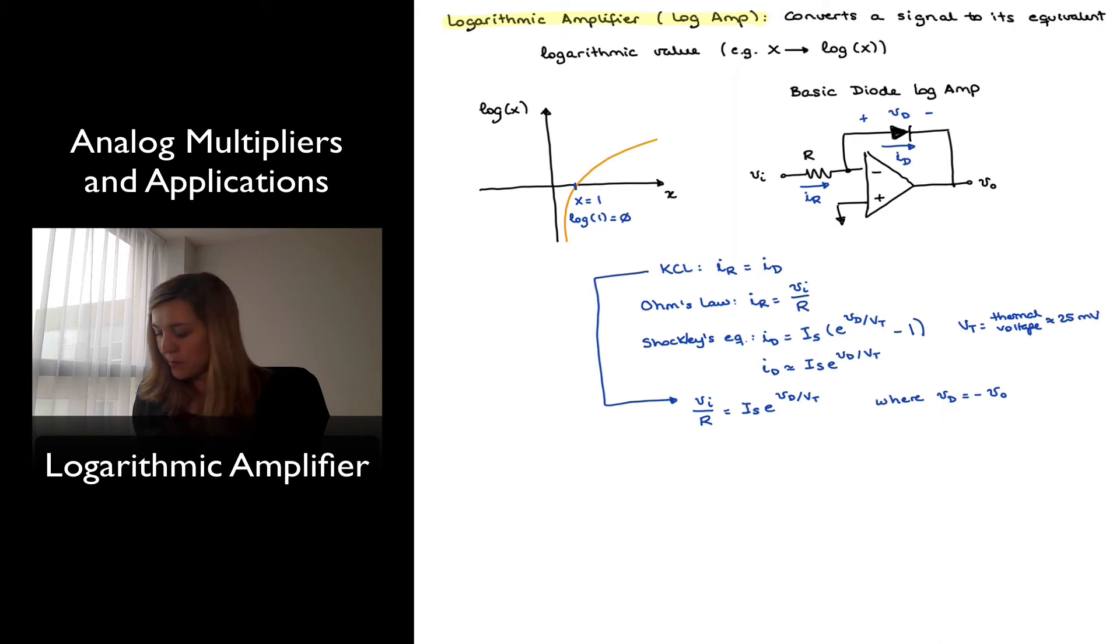So I can solve this equation by writing e to the VD over VT is equal to VIN divided by IS times R. And now I can take the natural log on both sides of the equation. And so I'll be left with VD over VT equals the natural log of VIN over IS times R. And therefore VD is equal to VT times the natural log, and since Vout is equal to negative VD, I will have that Vout is equal to negative VT times the natural log of VIN divided by IS times R.